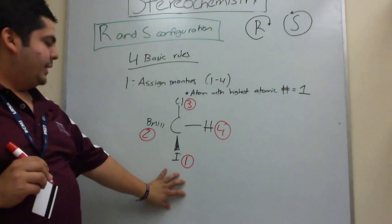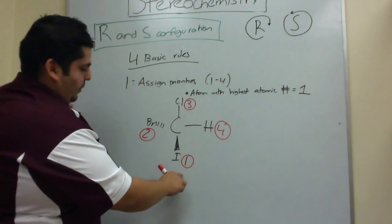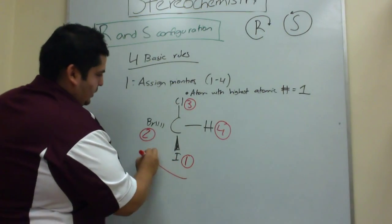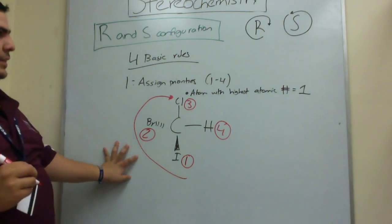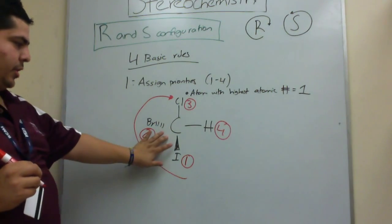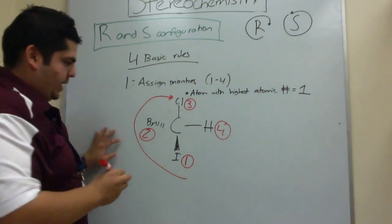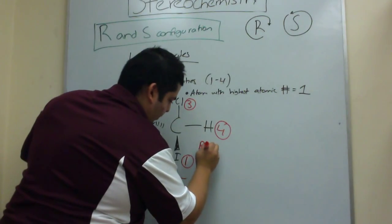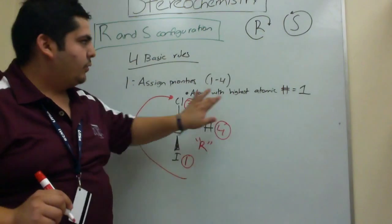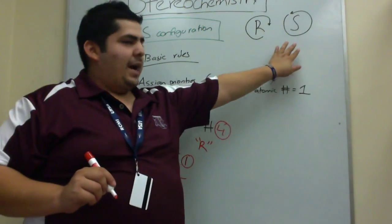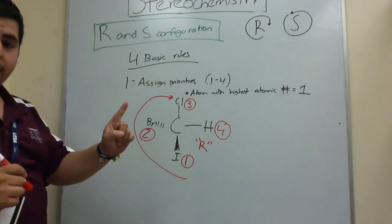The way that you do this is you simply look at the numbers and see if the molecule rotates clockwise — then that means the molecule has an R configuration. If it rotates counterclockwise, we're going to have an S configuration. That's rule number one.